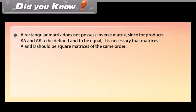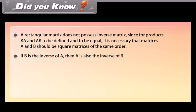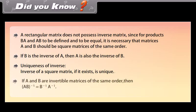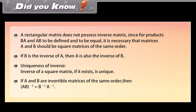Did you know? A rectangular matrix does not possess an inverse matrix, since for products BA and AB to be defined and equal, matrices A and B must be square matrices of the same order. If B is the inverse of A, then A is also the inverse of B. The inverse of a square matrix, if it exists, is unique. If A and B are invertible matrices of the same order, then the inverse of AB equals inverse of B times inverse of A.